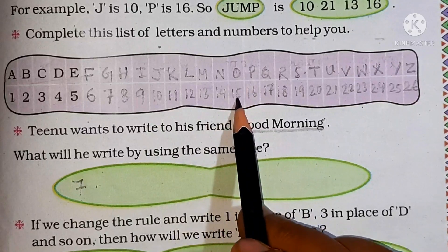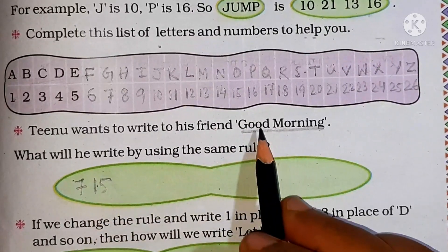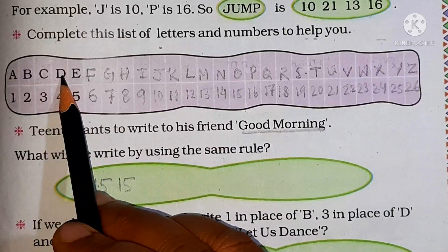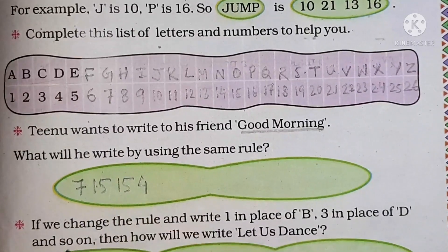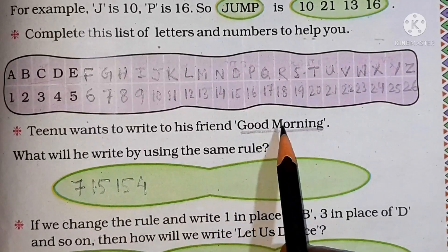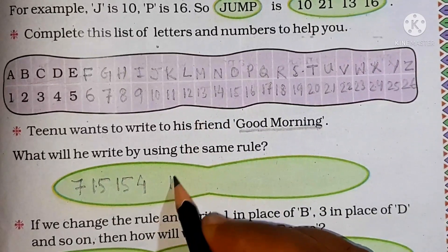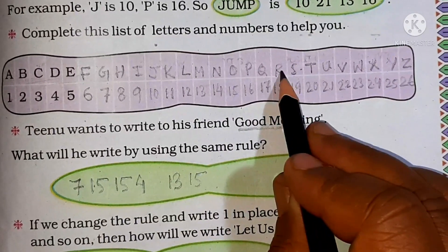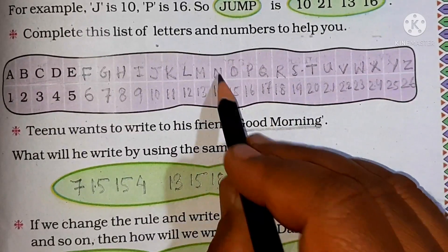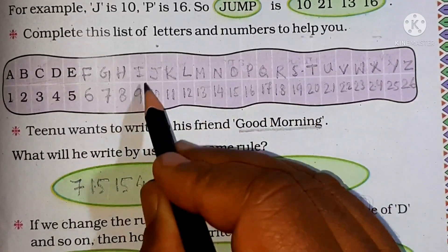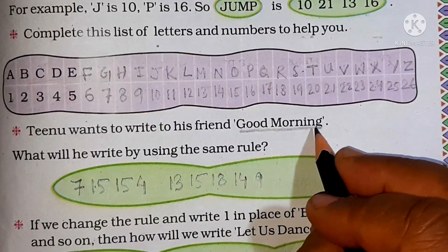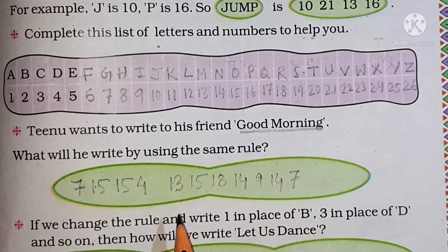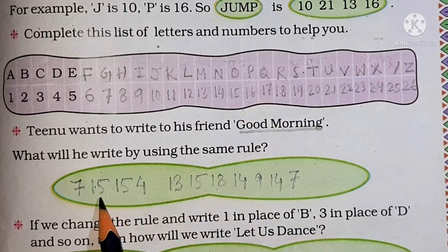Next I have O — 15. One more O, one more 15. Next, D — what is the number assigned for D? 4. So I will write here 4. Good is completed. Now morning: M — number for M is 13. So 13. O is 15. R is 18. N is 14. I is 9. N again is 14. And at last G is 7. So here you can see children, good morning has been written using numbers.